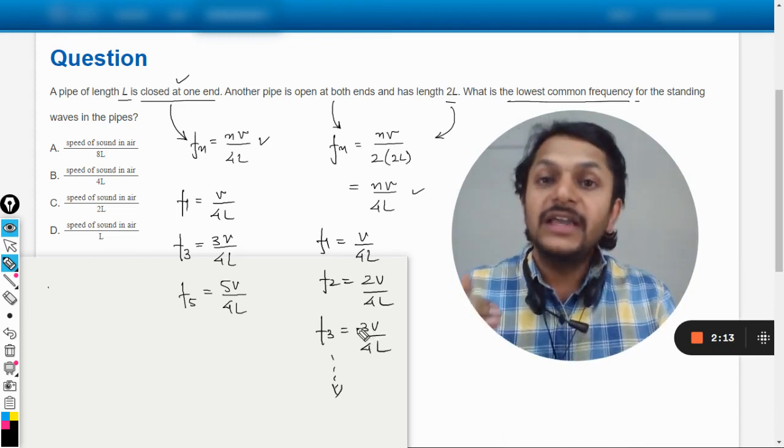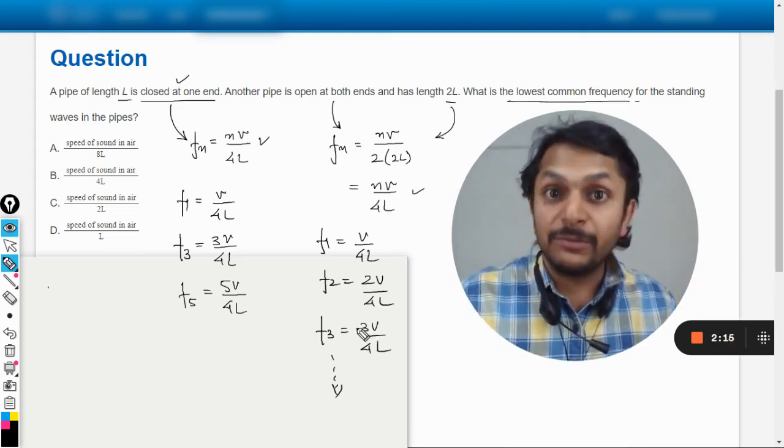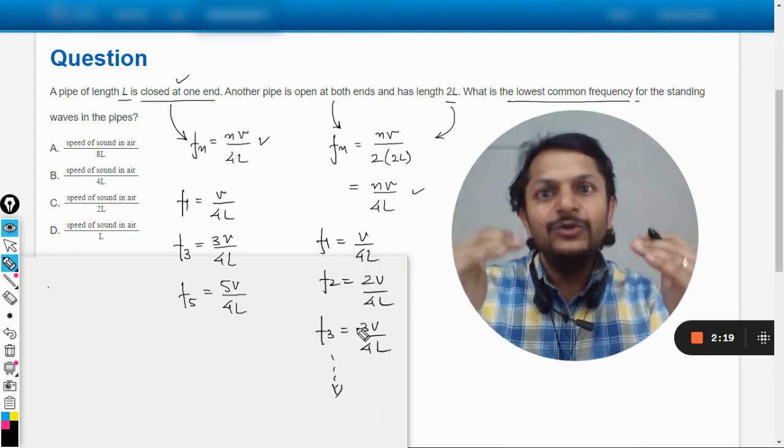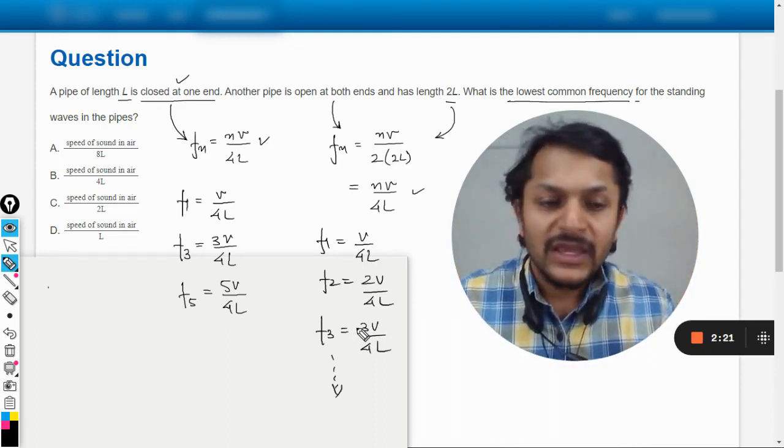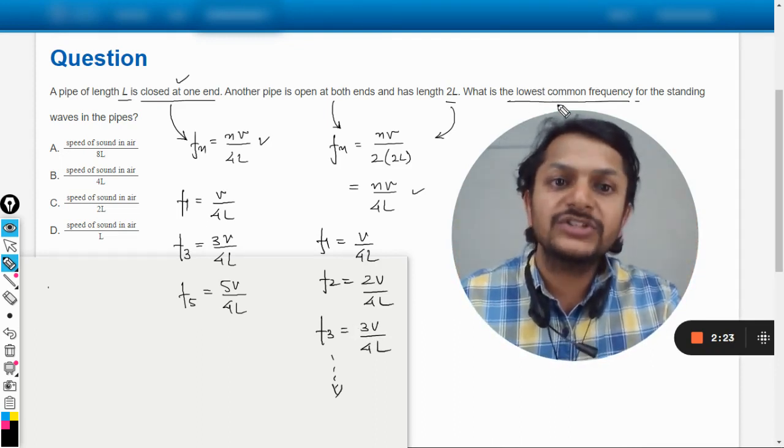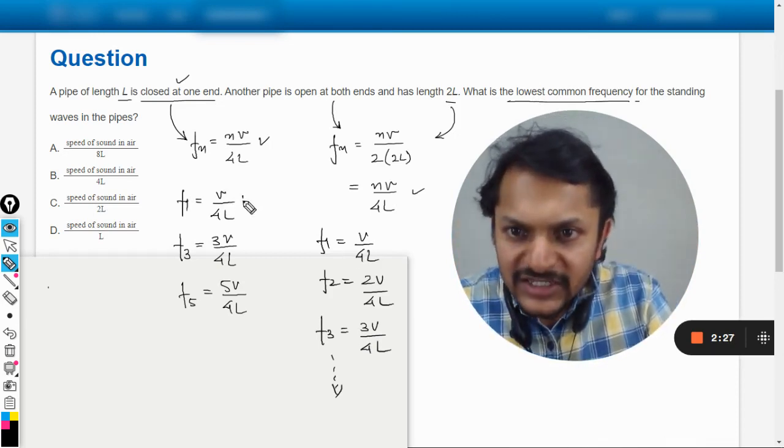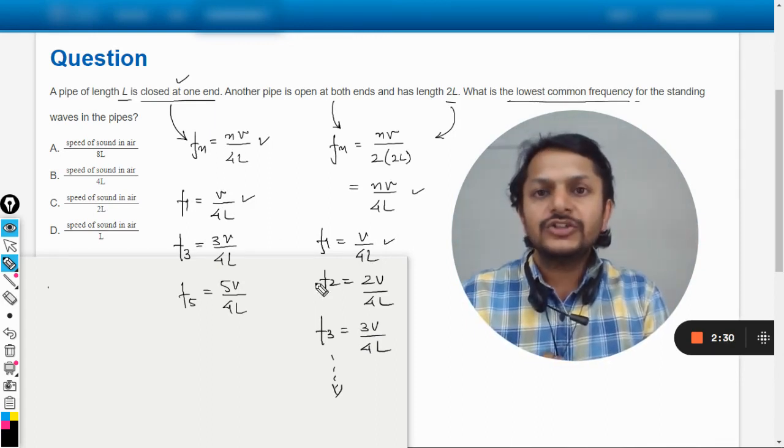So you see, this is V/(4L), and this is also V/(4L), so we can say that these are common. Then 3V/(4L) and 3V/(4L) are also common, but they are not the lowest. We're talking about the lowest,